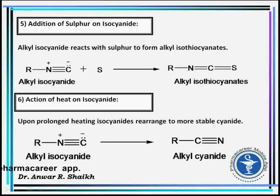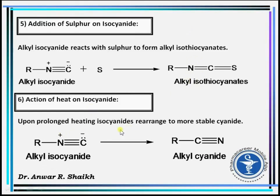Addition of sulfur on isocyanide: alkyl isocyanide reacts with sulfur to form alkyl isothiocyanide. Action of heat on isocyanide: upon prolonged heating, isocyanides rearrange to the more stable cyanide.